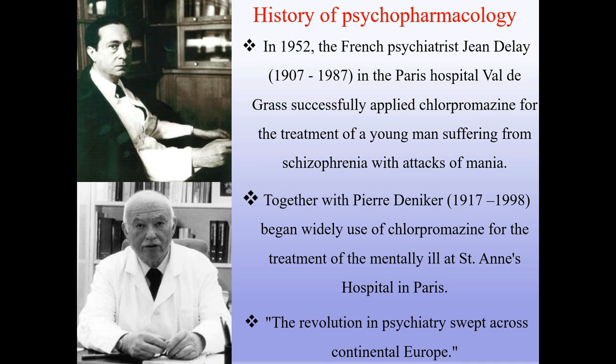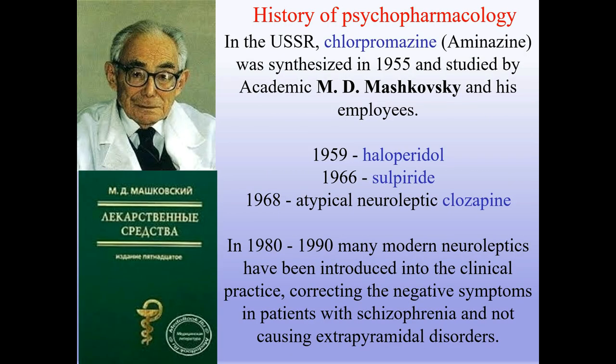History of psychopharmacology. In 1952, French psychiatrist Jean Delay at the Paris hospital Val-de-Grace successfully applied chlorpromazine for the treatment of a young man suffering from schizophrenia with attacks of mania. Together with Pierre Deniker, he began the widespread use of chlorpromazine at St. Anne's Hospital in Paris. The revolution in psychiatry swept across continental Europe. In the USSR, chlorpromazine (aminazine) was synthesized in 1955 and studied by academic Moshkovsky and his employees.